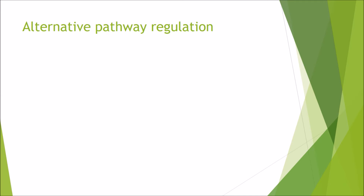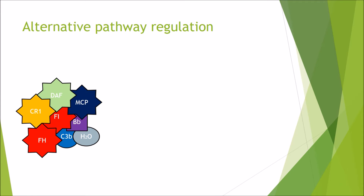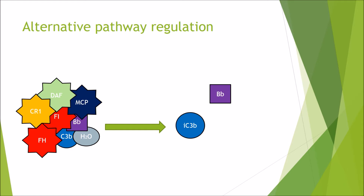The alternative pathway is regulated to prevent pathology. Molecules factor I and factor H can be recruited to inactivate C3b. Other regulatory molecules include MCP, DAF, and CR1. These facilitate cleavage of C3b into iC3b (inactive C3b), which prevents factor Bb from binding and stops C3b from acting as a C3 convertase or continuing the complement cascade.